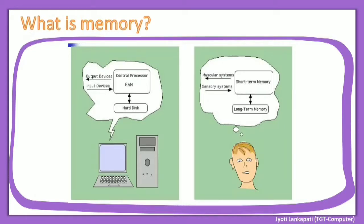Some data we can remember throughout our life, but some data we can forget. Likewise, a computer also has two types of memory: short-term and long-term. Short-term memory is RAM and long-term memory is the hard disk. Short-term memory saves data for a short period of time, and long-term memory saves data for a long period of time.